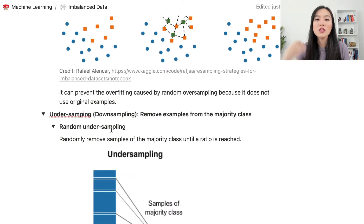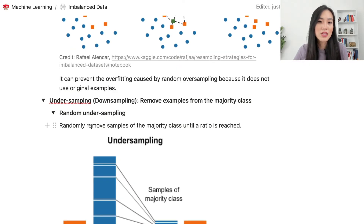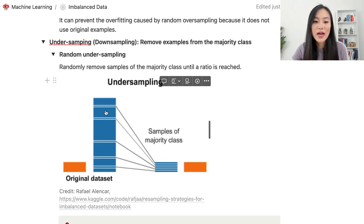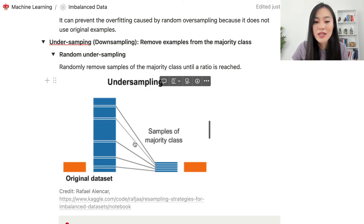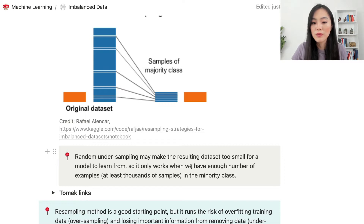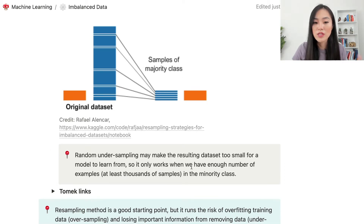Another resampling method is undersampling, or downsampling — we simply remove examples from the majority class. Random undersampling randomly removes samples of the majority class until a ratio is reached. In the diagram, samples are removed from the majority class, leaving both classes with a similar number of examples. One thing to note: random undersampling may make the resulting data set too small to learn from, so it only works when we have enough examples — at least thousands — in the majority class.